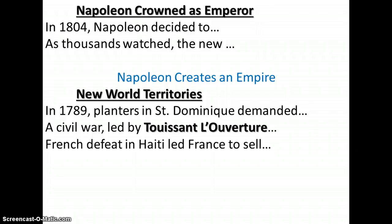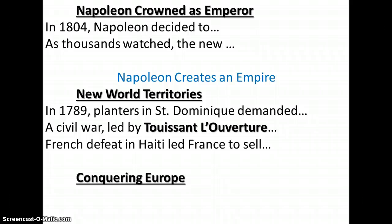The French defeat in Saint-Dominique led France to sell New Orleans and the Louisiana Territory to the United States for $15 million. Saint-Dominique becomes Haiti — they renamed it. Napoleon was going to lose the land anyway, so he figured he might as well make some cash on it. He did not want to lose it to his enemies. The United States was a friend at that time, so Napoleon gained money and punished the British by selling that land to the young United States.